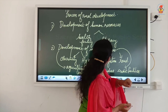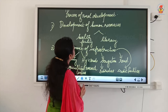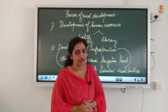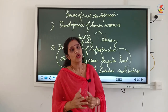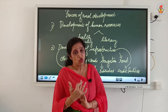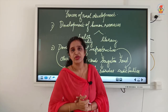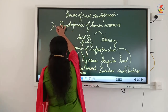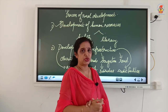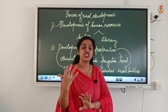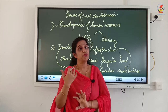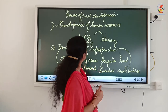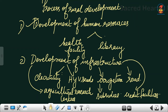Now let us move on to the next topic: the process of rural development. What are the different processes of rural development? Point number one is development of human resources. What are the processes involved in achieving rural development? The first process is development of human resources.